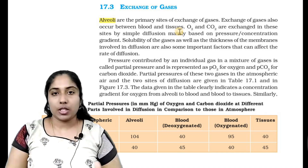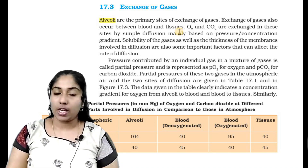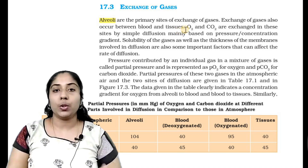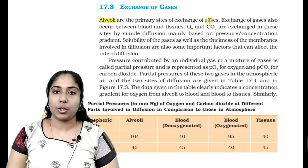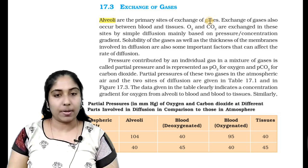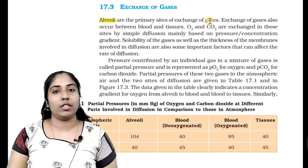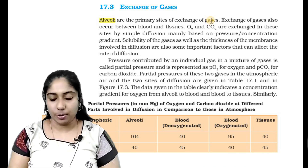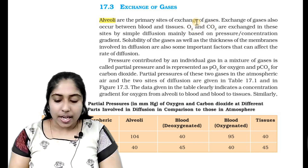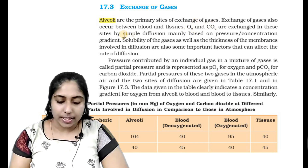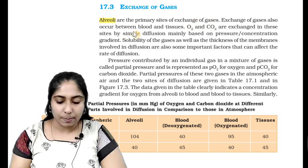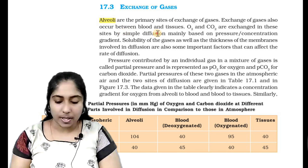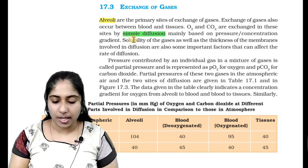Now we are going to look at the exchange of gases in the alveoli, and the same occurs between blood and tissues. That is why the blood and alveoli exchange gases. Oxygen and carbon dioxide are exchanged in these sites by simple diffusion, mainly based on the pressure gradient or concentration gradient.